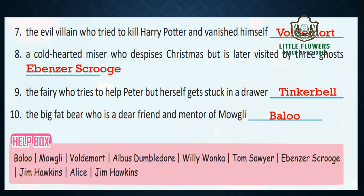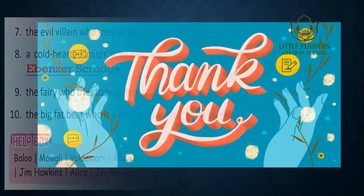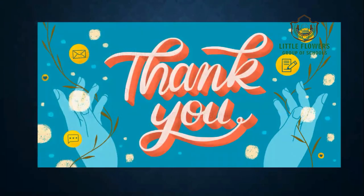Number eight: a cold-hearted miser who despises Christmas but is later visited by three ghosts — he was Ebenezer Scrooge. Number nine: the fairy who tries to help Peter but herself gets stuck in a drawer — she was Tinkerbell. Number ten: the big fat bear who is a dear friend and mentor of Mowgli — he was Baloo. That was all about exercise number 34. I hope you liked the session. Thank you.